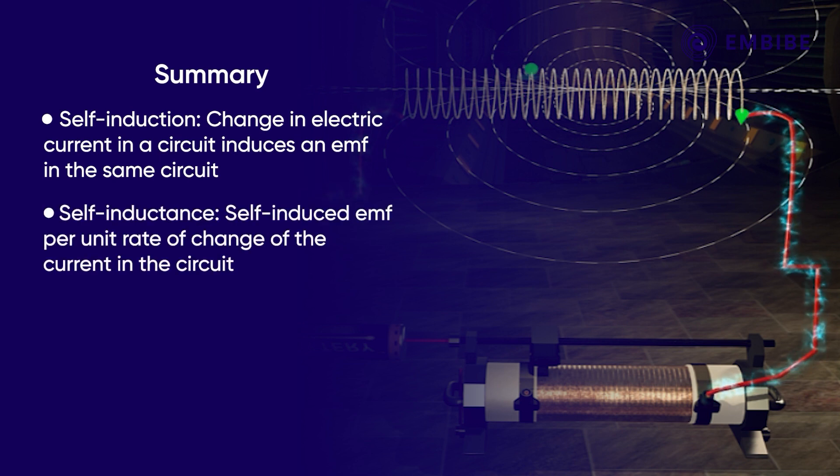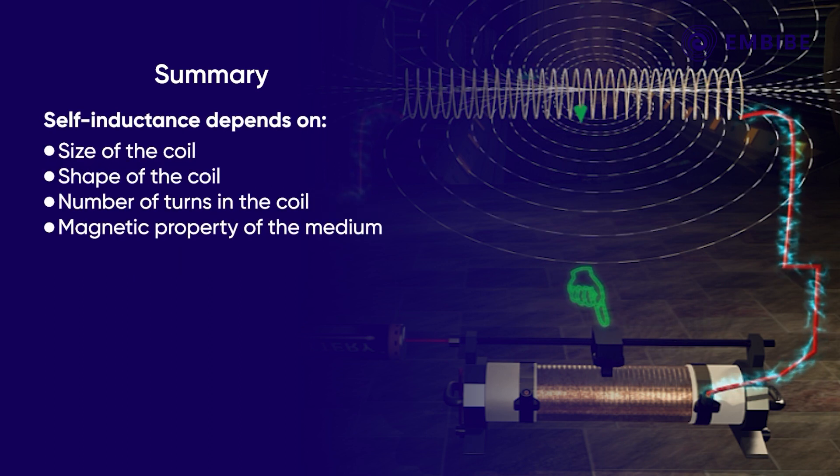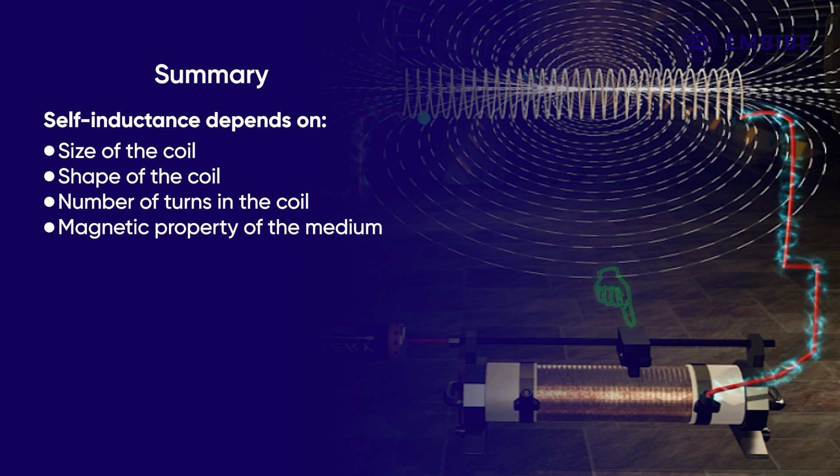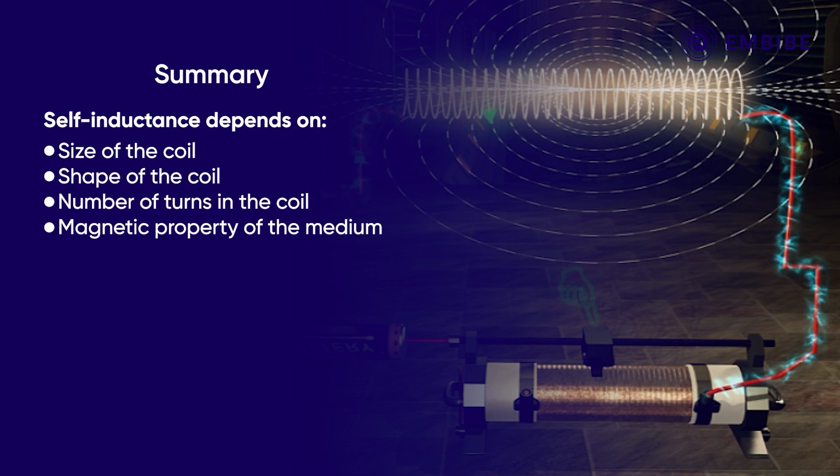We learnt that self-inductance of a circuit is defined as the self-induced electromotive force per unit rate of change of the current in the circuit and its value depends upon the size and shape of the coil, number of turns and the magnetic property of the medium within the coil.